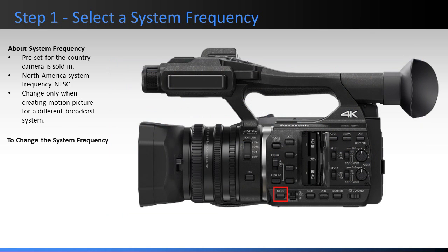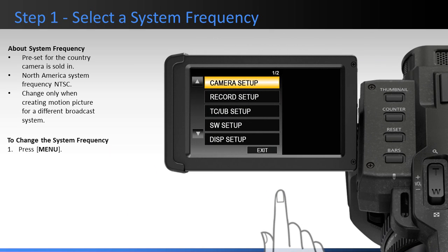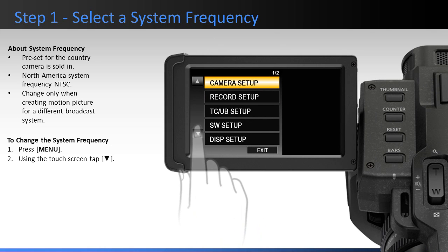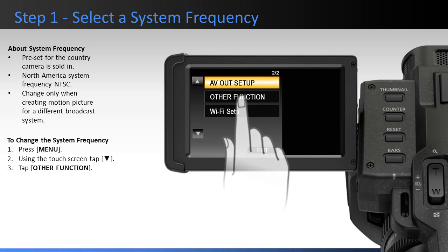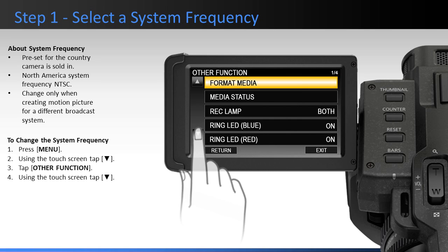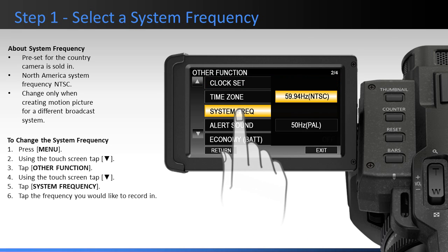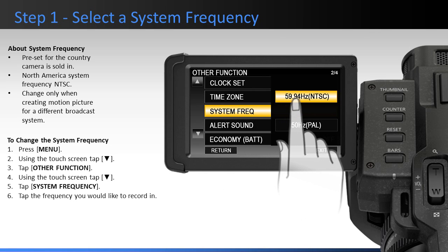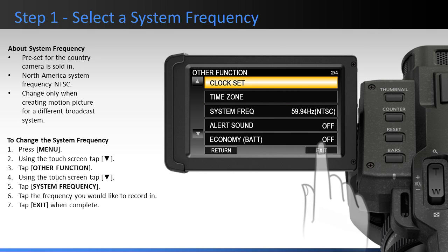To change the system frequency, press the menu button. The camera main menu appears. Using the touch screen, tap the arrow down to go to Screen 2 and tap Other Function. Tap the arrow down again to scroll to Screen 2 of the Other Function menu and tap System Frequency. Tap the frequency you would like to record in. For this example, we would like to use the camera in the NTSC system frequency, so we are leaving it as is. Tap Exit to finish.